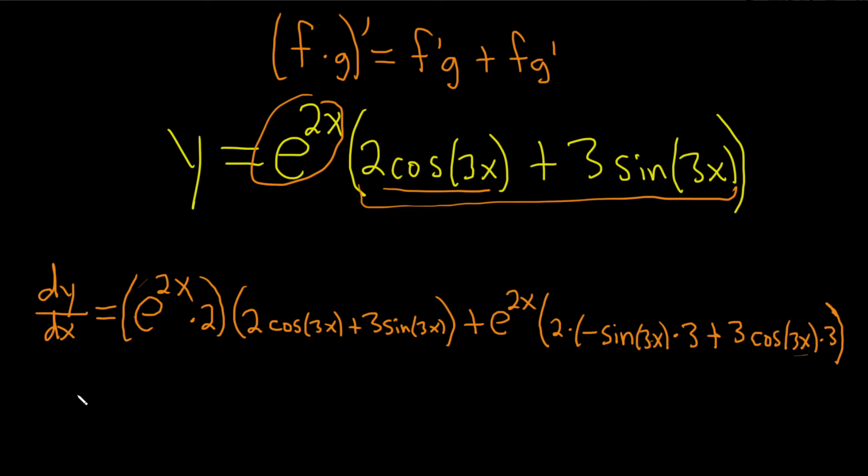Let's clean up this huge mess. So dy/dx. I'm going to use a different more fun color. Let's go with blue. And let's just distribute and clean everything up. So we're going to do this times this. It's going to give us 2 times 2 is 4. So we get 4 e to the 2x.